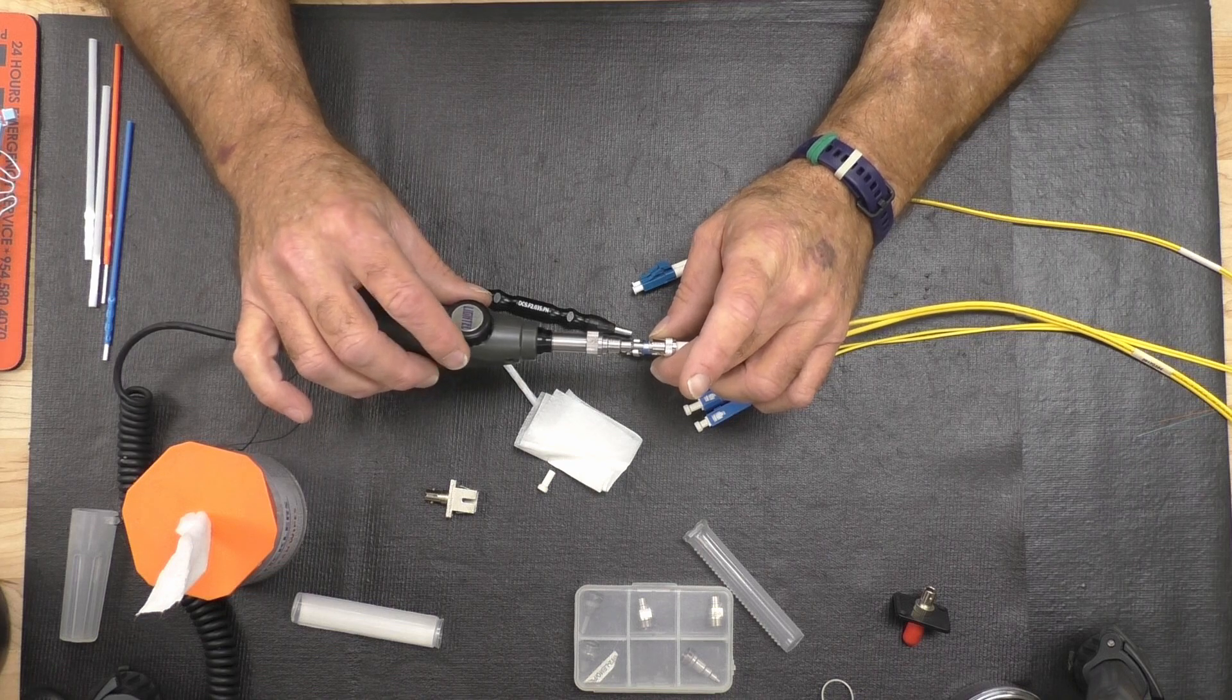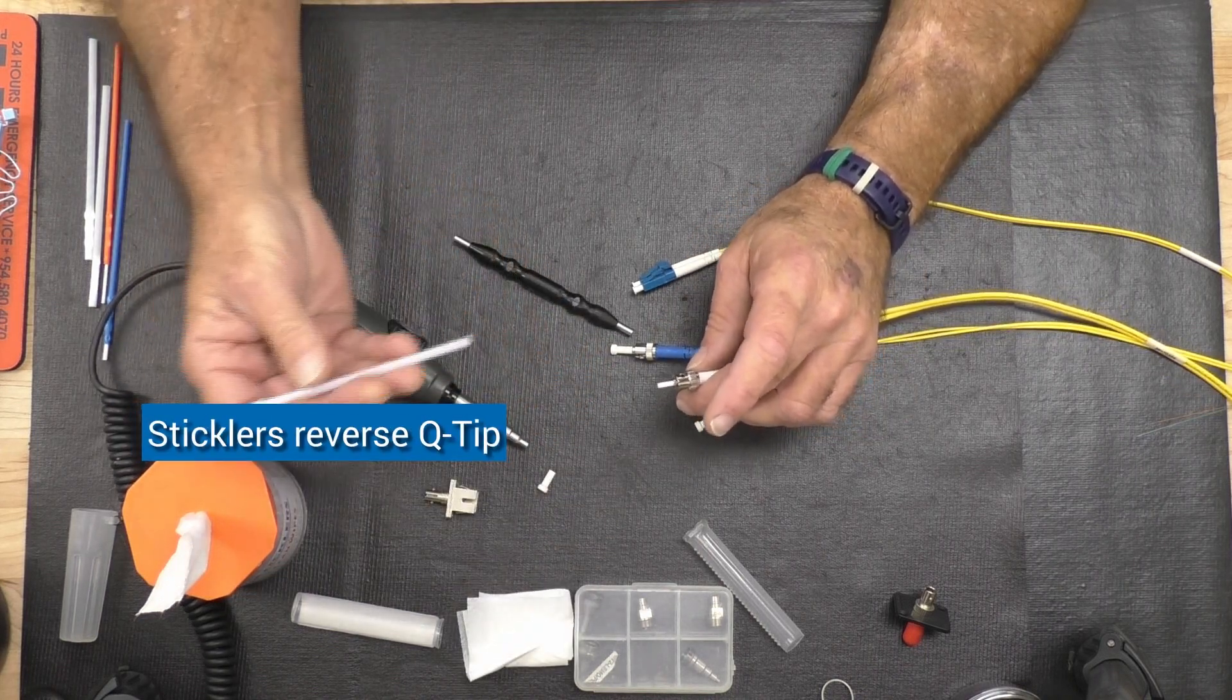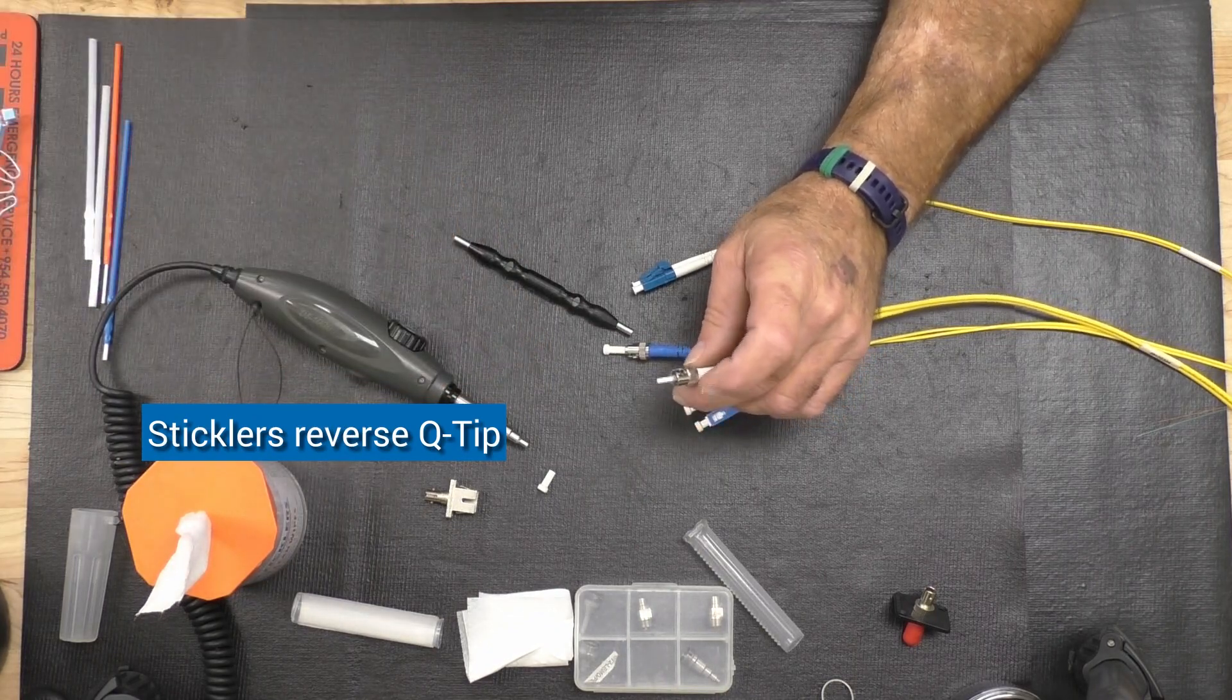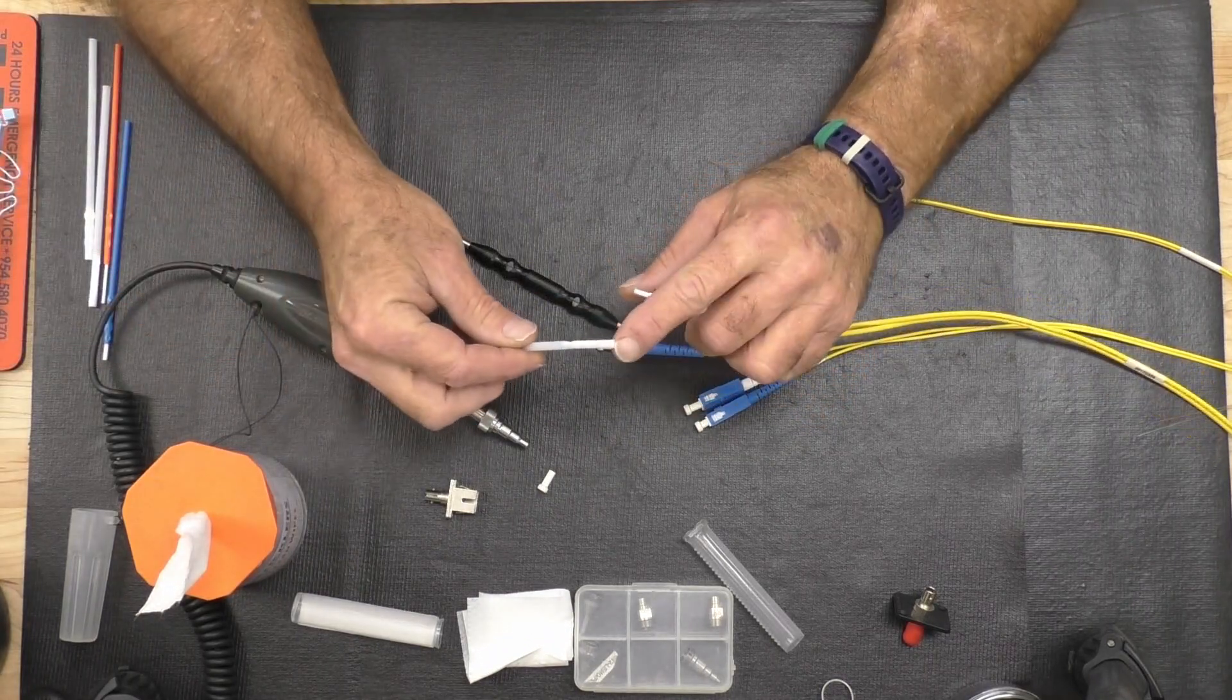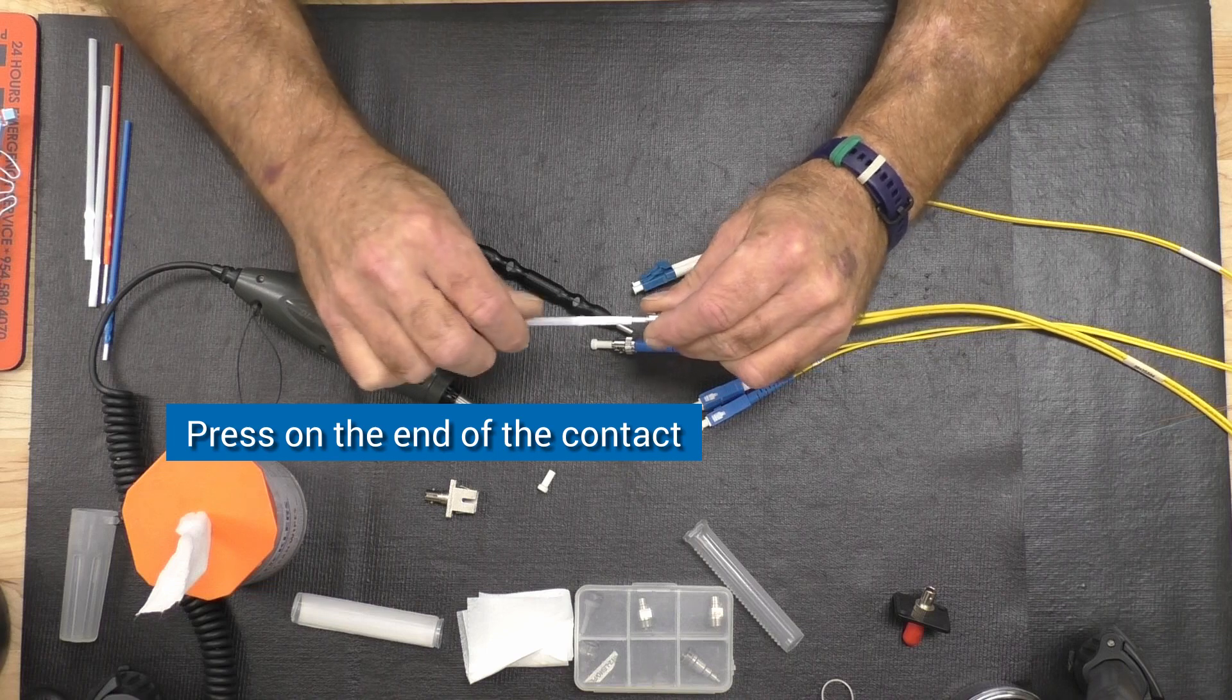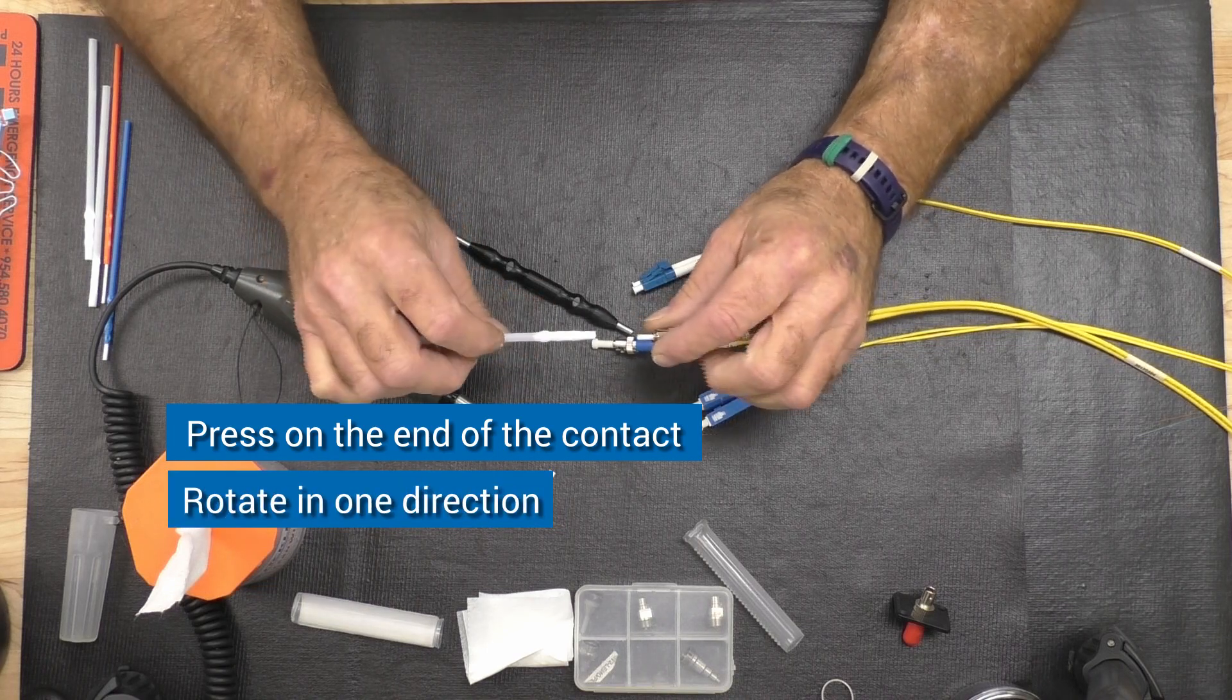There are other options. In this case, sort of a reverse Q-tip design—these are also done by Stickler. I call them the 2.5s. They basically have the cleaning material down inside of a tube to give you the ability to press positively on the end of a contact, rotating again in one direction to clean the surface of a contact and visually inspect it.